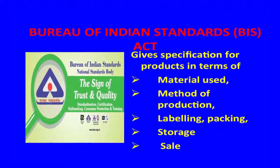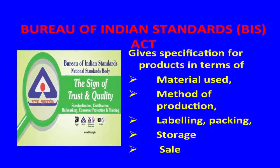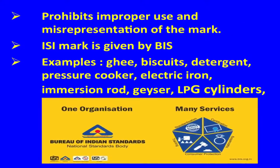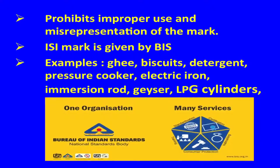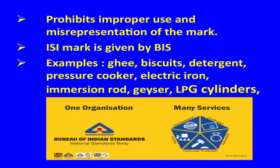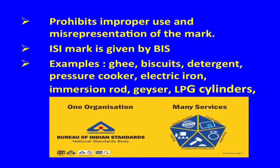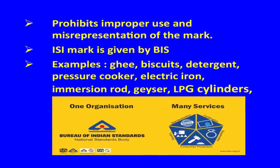Bureau of Indian Standards, that is BIS Act, gives specifications for products in terms of material use, methods of production, labeling, packaging, storage, and sale. It prohibits the impure use and misrepresentation of the mark. The ISI mark is given by BIS. Examples of products containing the ISI and BIS mark are ghee, biscuits, detergent, pressure cooker, electric iron, immersion rod, geyser, LPG cylinders, and many more.